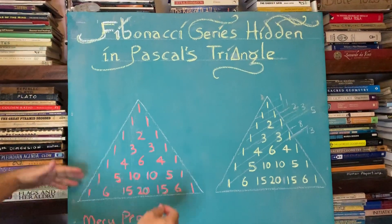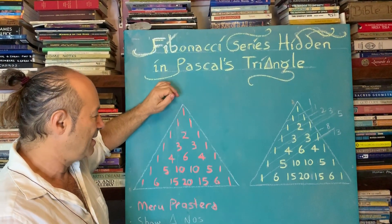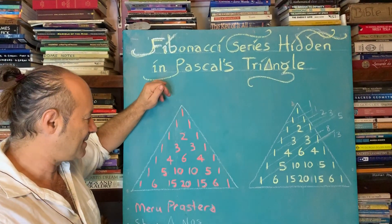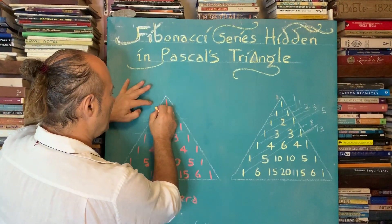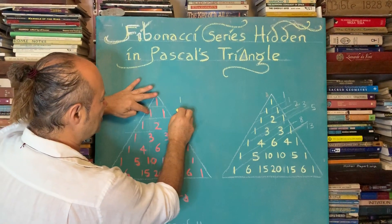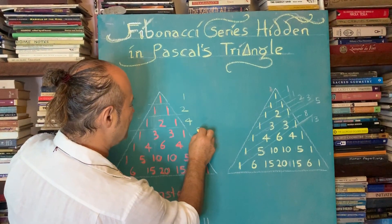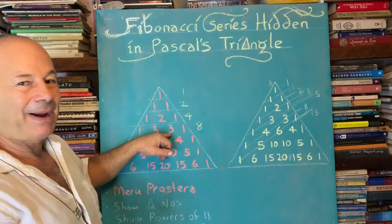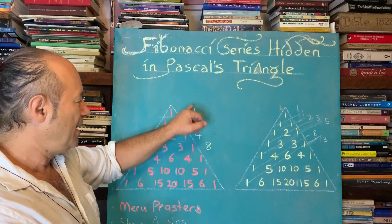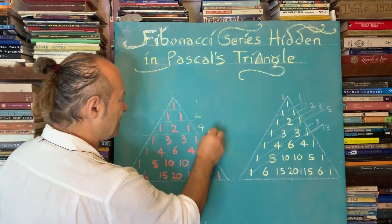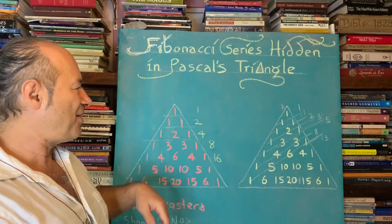You can keep expanding it - mathematicians have written many many books on this, because inside this triangle matrix we have many many sequences. The first thing I noticed is that if you add each row: one is one, one and one is two, one plus two plus one is four, one plus three plus three plus one is eight. So we can predict - because we understand pattern and shape - we can predict without even adding up that one plus four plus six plus four plus one must be sixteen. So Pascal's Triangle reveals what's called the doubling sequence: 1, 2, 4, 8, 16.